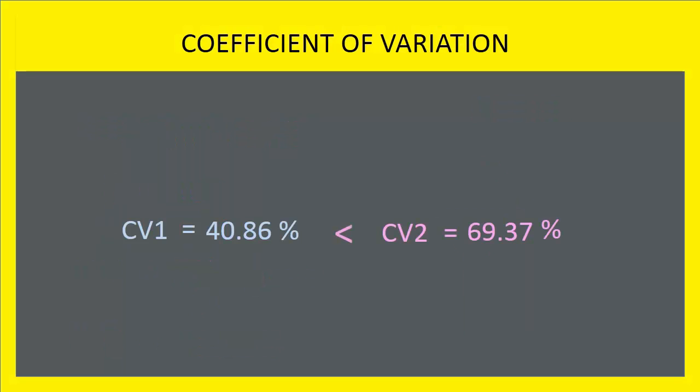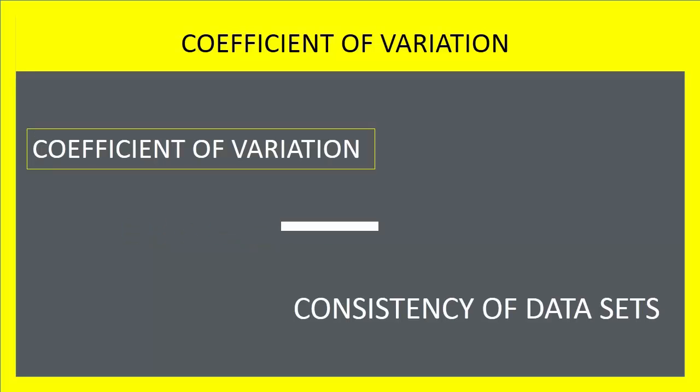When we compare the coefficient of variation, the first player is more consistent or stable than the second. Thus, coefficient of variation is used to know the consistency of a data set.